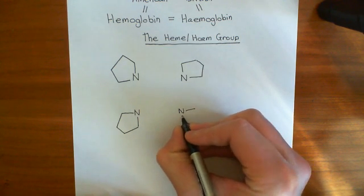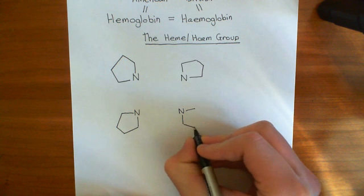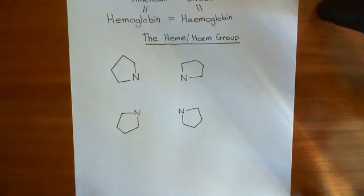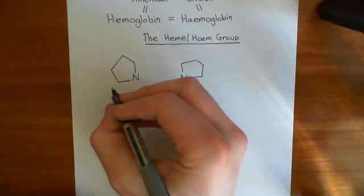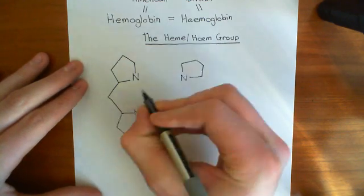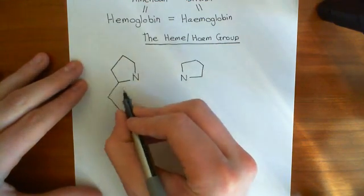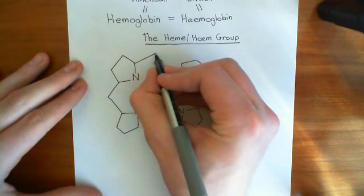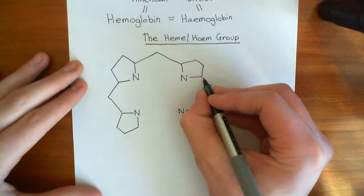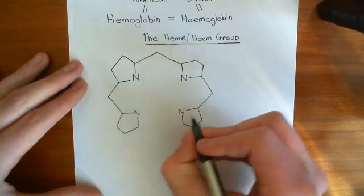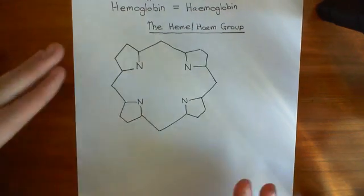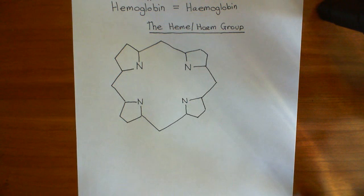You have four five-membered rings, each containing a single nitrogen atom and four carbon atoms. They are all connected together by a carbon linking each pair of rings. So here's a carbon linking these two, here's a carbon linking these two, here's a carbon linking these two, and here's a carbon linking these final two rings.